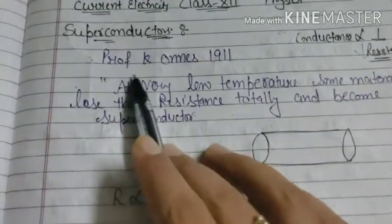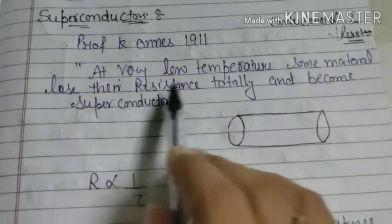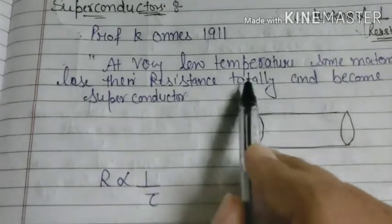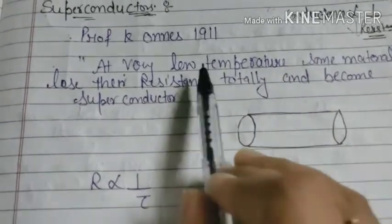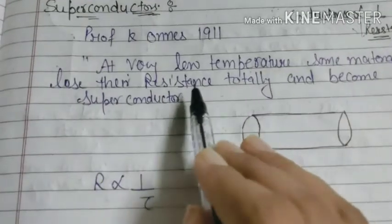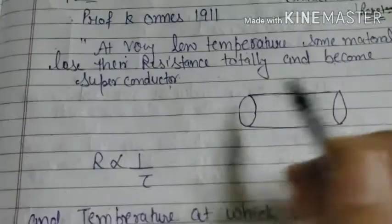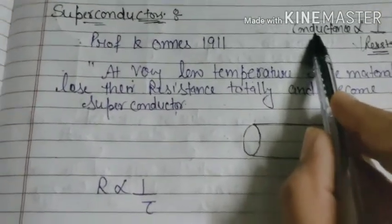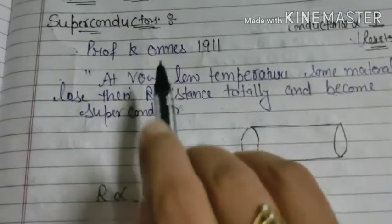In 1911, Professor Kamerlingh Onnes introduced the concept of superconductivity. He said that at very low temperatures, some materials have some resistance — but as we lower the temperature further, something interesting happens to that resistance.